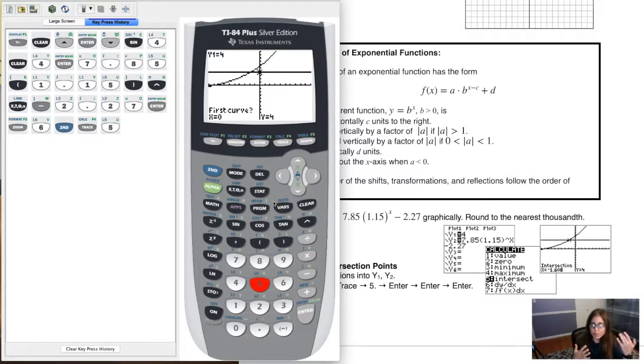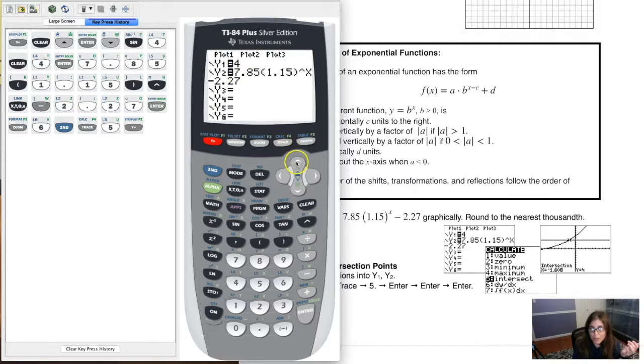Now your calculator is going to prompt you with a bunch of things. It's asking you which curves do you want? Which two curves do you want to find the intersection points of? The reason it's asking which curves is because potentially you could write 10 curves, 10 graphs into your y equals. Now, we only have two in there right now. So the only two that we're going to intersect are y1 and y2, but you could potentially have a bunch in there. You just need to tell your calculator which two do you want to look for the intersection?